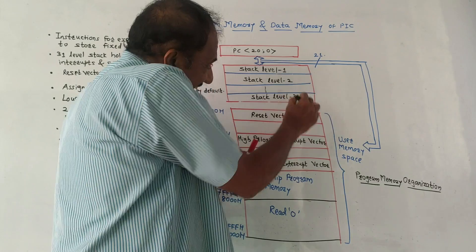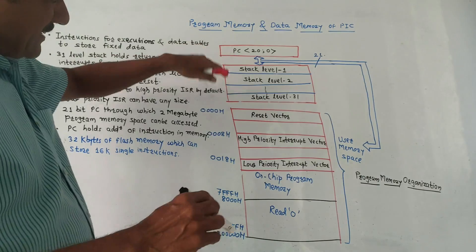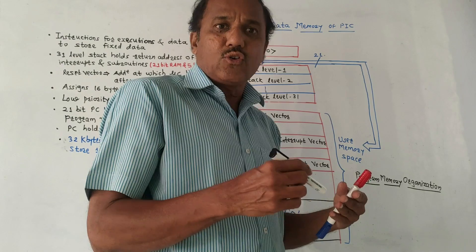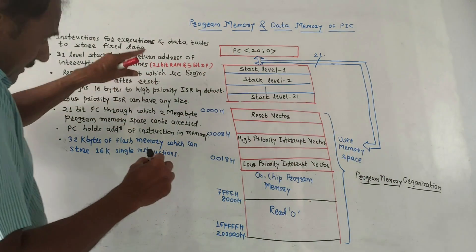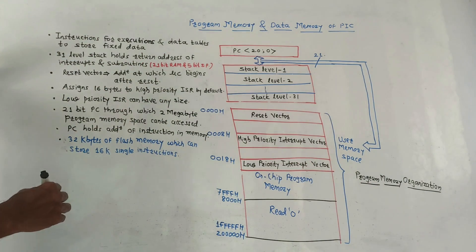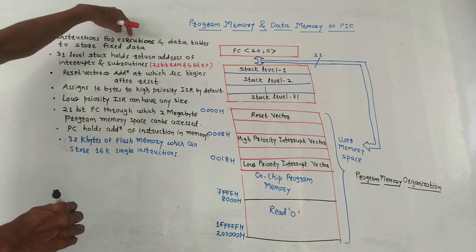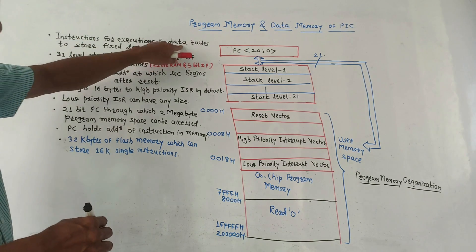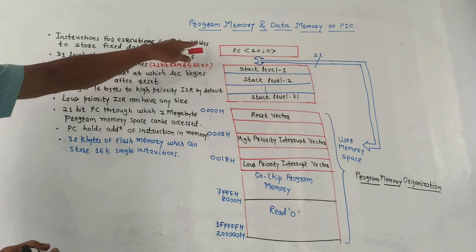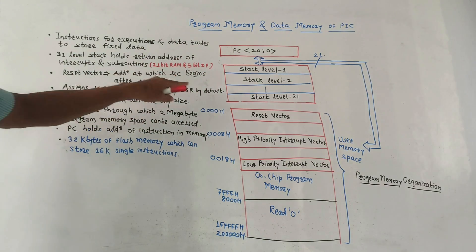The stack is not part of program memory. Similar to the stack we studied in microcontroller 8051, the major function of program memory is to store the instructions required for execution of any program. It is also required in many applications to store data tables of fixed data. That is the major use of program memory.